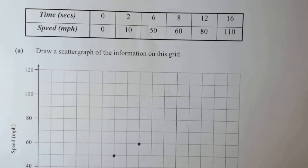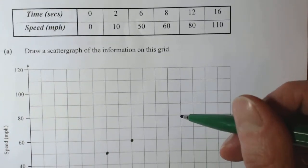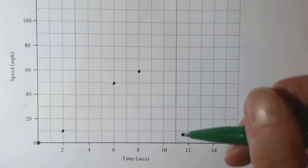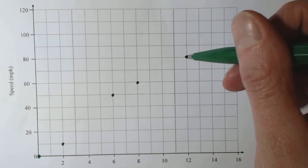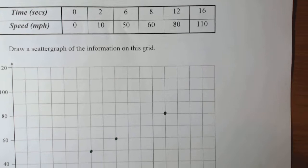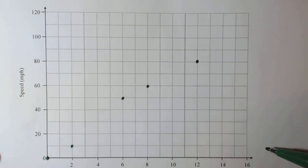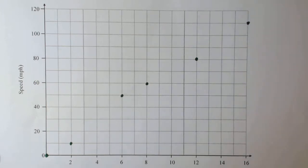We then have a look at - it goes up to 12 now. So 12 is at 80. There's 12, we go up, that's round about 80. And at 16, we have 110. So 16, we'll go up there, and we've got 110.